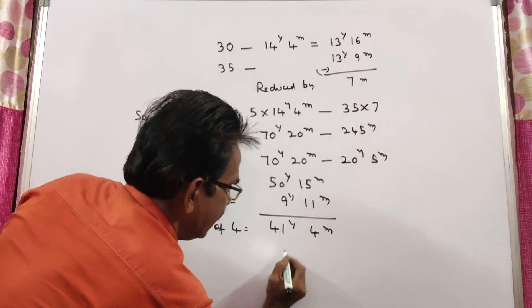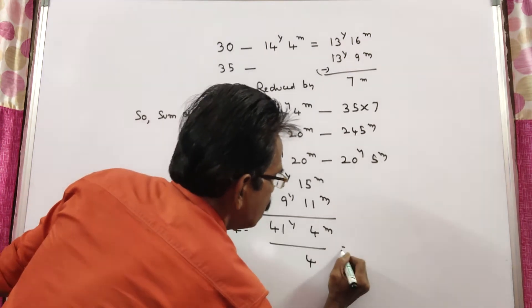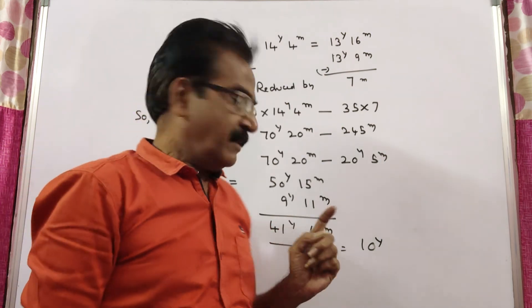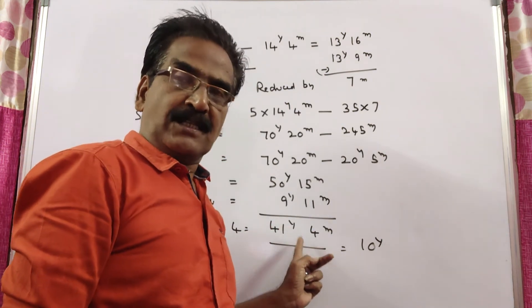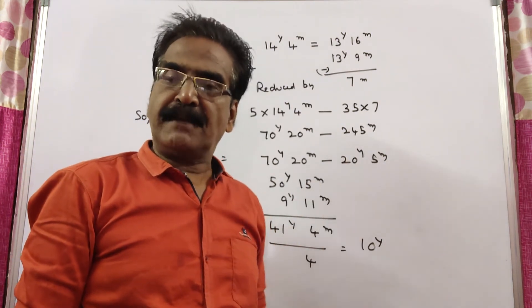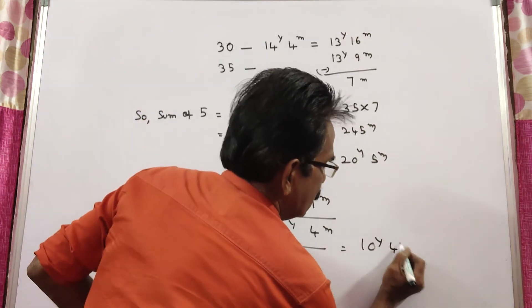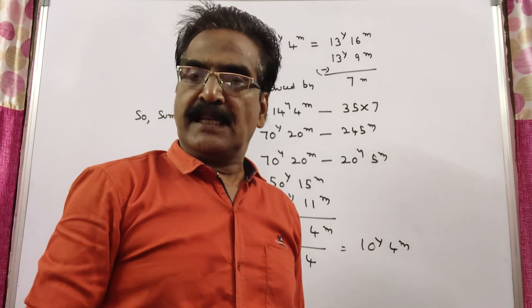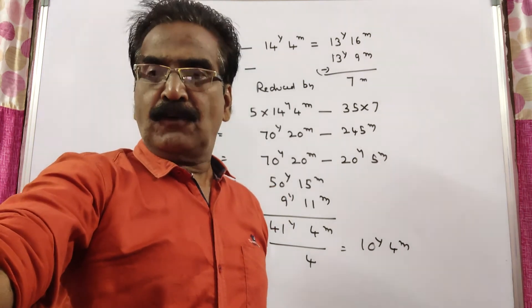And average is equal to by 4. So, 10 years, 4 tens to 40, 1 year remains. 1 year means 12 months, 12 plus 4, 16 months. 16 by 4 means 4 months. So, 10 years, 4 months is the average of the remaining 4 students.